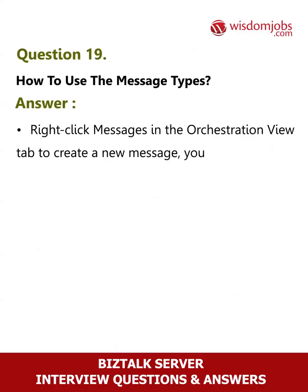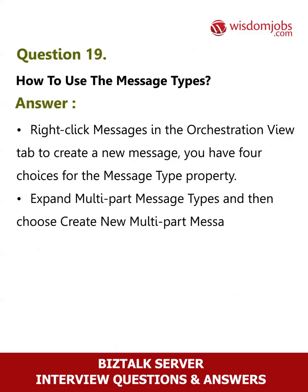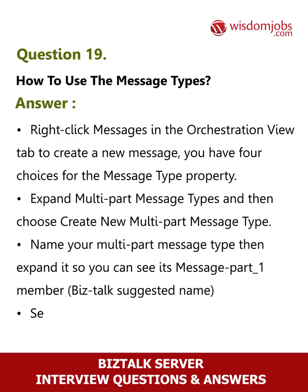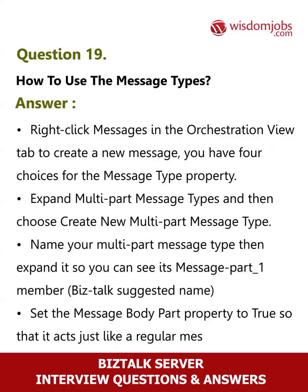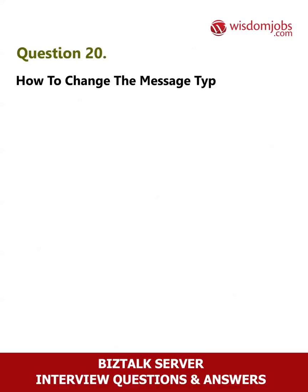Question 19: How do you use message types? Answer: Right-click Messages in the Orchestration View tab to create a new message. You have four choices for the message type property. Expand Multi-Part Message Types and choose Create New Multi-Part Message Type. Name your multi-part message type, then expand it so you can see its MessagePart_1 member. Set the message body part property to true so that it acts just like a regular message.